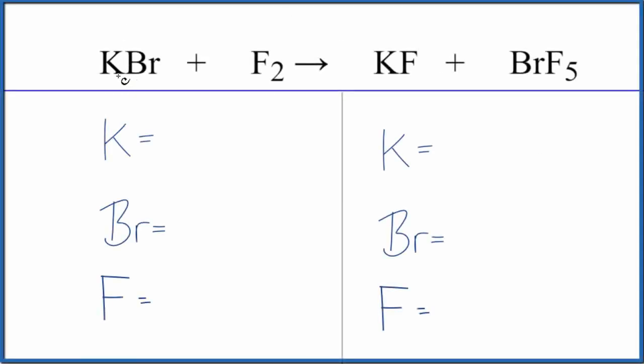In this video we'll write the balanced equation for KBr plus F2, potassium bromide plus fluorine gas. Let's count the atoms up and balance the equation. We have one potassium atom, one bromine, two fluorine atoms. On the product side we have one potassium, one bromine, and then one fluorine.